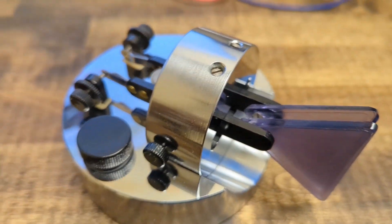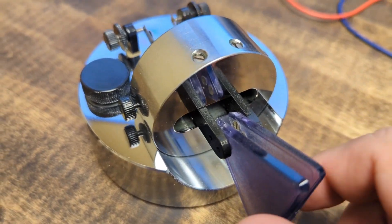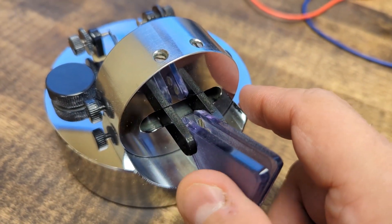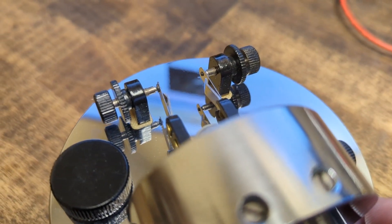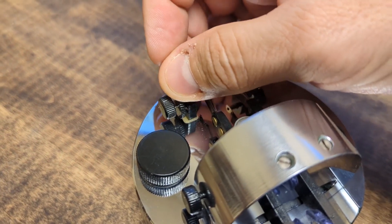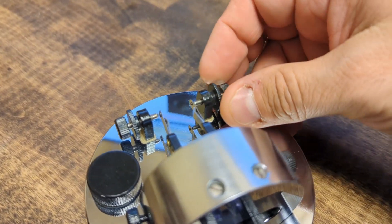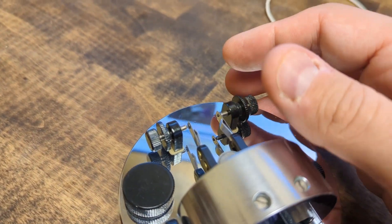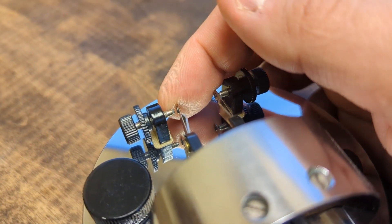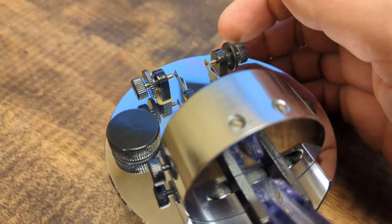But as is usual for a lot of the other keys that are out there or paddles that are out there, you've got two finger pieces here. When you push on one of them it creates contact with this post here. So this post is connected to the left side. This is connected to the right side. So you've got dots over here and dashes over here. And from what I understand the contact points are silver for each one of these. So that's kind of cool.